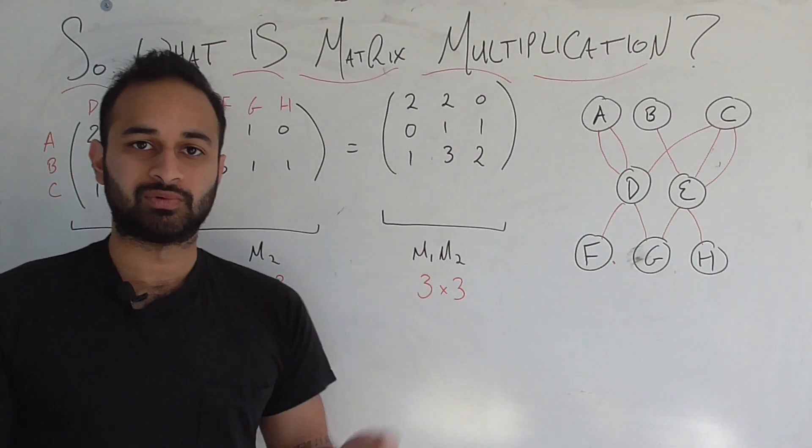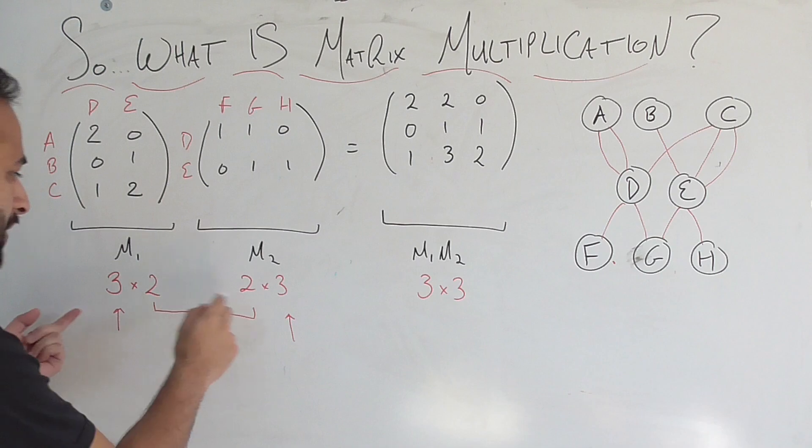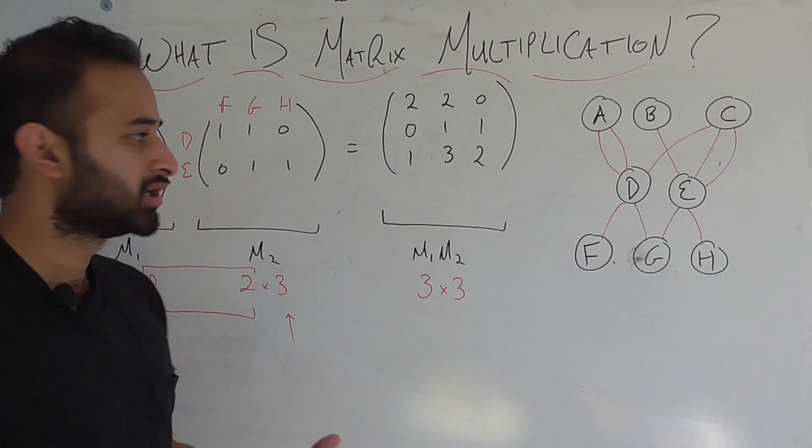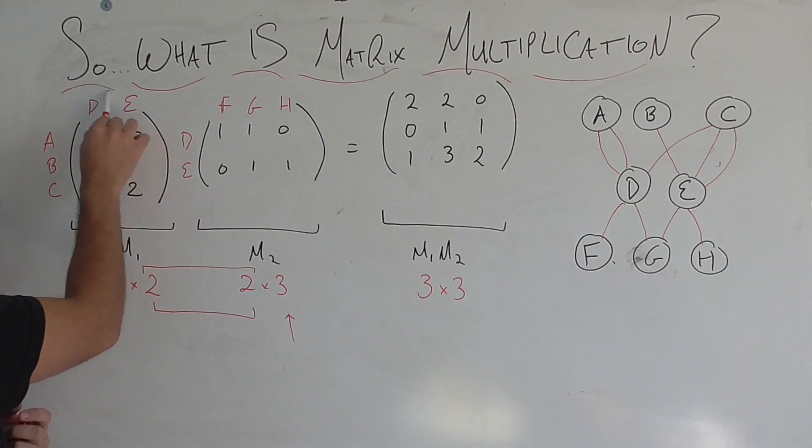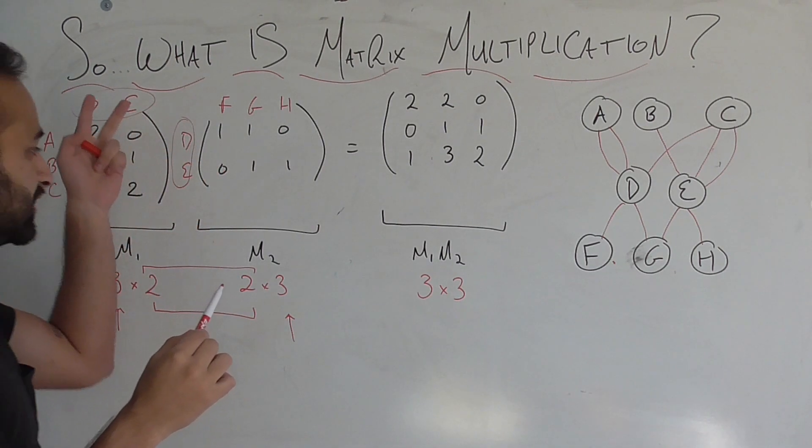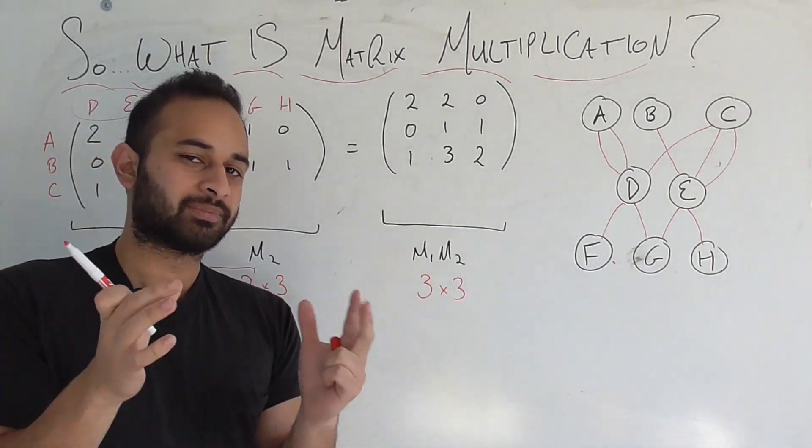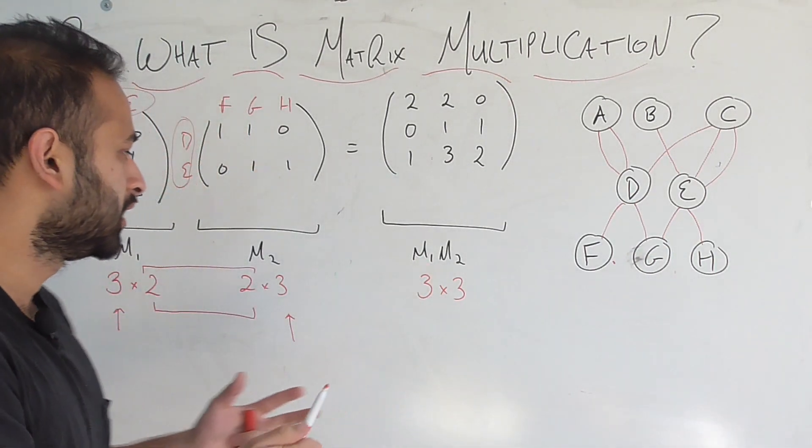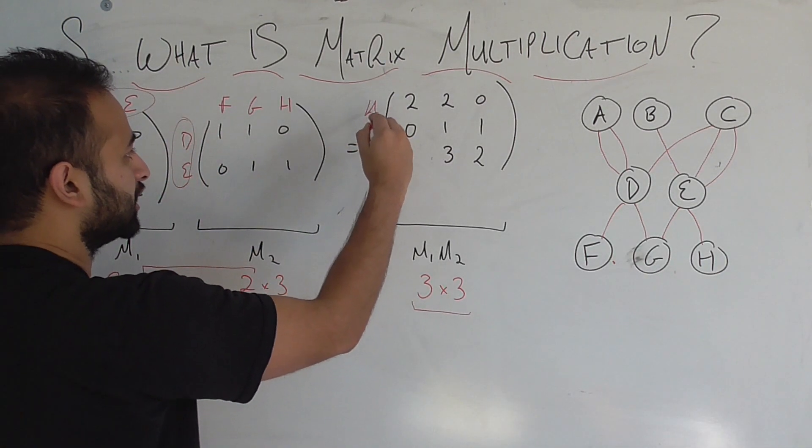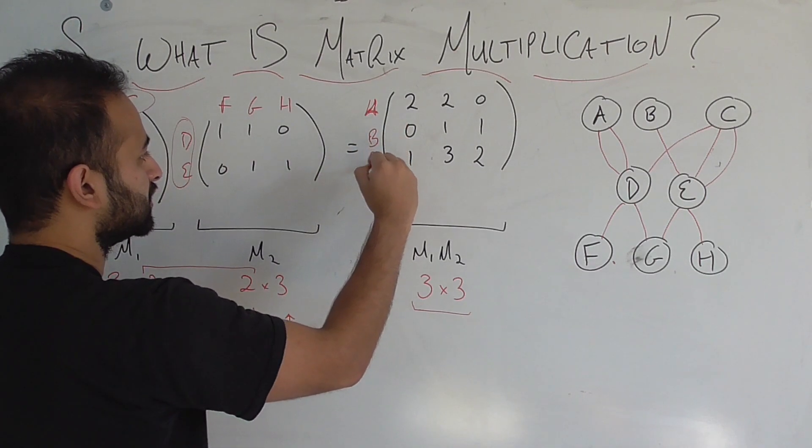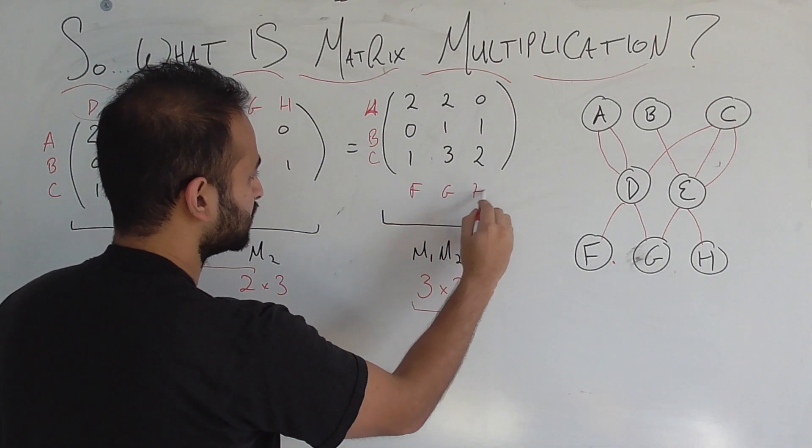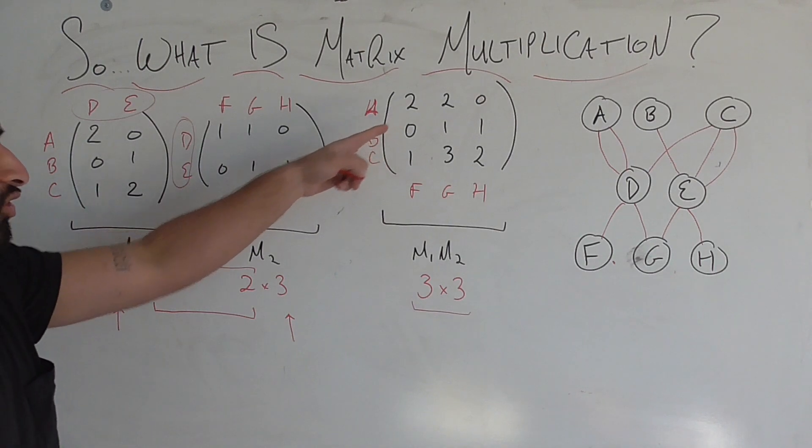Okay, so before we go to what the product means, we get a better idea of why these dimensions have to match up. So, these inner dimensions need to match up because usually they associate to the same ideas or concepts. In this case, this two matches up to the layover cities, and this two matches up to again the layover cities. So that's why you need these two numbers to be the same because they match up to the same conceptual understanding. And again, we see why the final dimensions are three by three because in the end we have something where it's A, B, C, something associated with A, B, C on the rows, and then something associated with F, G, H on the columns.